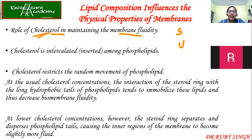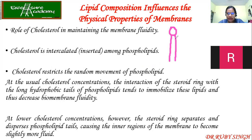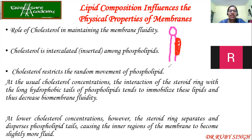In the plasma membrane, cholesterol is intercalated or inserted among the phospholipids. If you see the structure, you have phospholipids present on the outer and inner leaflets, and in between, you have your cholesterol. These cholesterol molecules restrict the random movement of phospholipids — wherever cholesterol is attached to a phospholipid, it cannot undergo rotation or lateral movement as discussed in earlier lectures. So it is restricting the random movement of phospholipids.